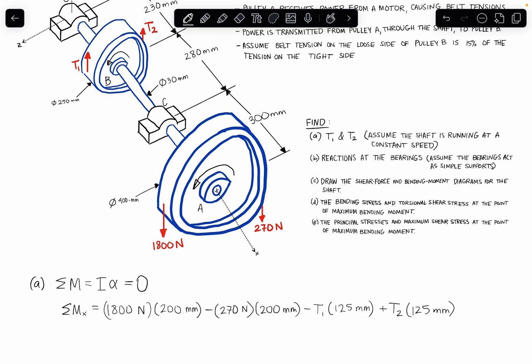Okay, so this is our first equation, and if I do some quick calculations here, I can work out the 1800, I'm going to do times 0.2, so I'm converting millimeters to meters, minus 270 times 0.2 is going to give me 306 newton meters minus, or let's do plus 125, or I'll do 0.125 meters times T2 minus T1.